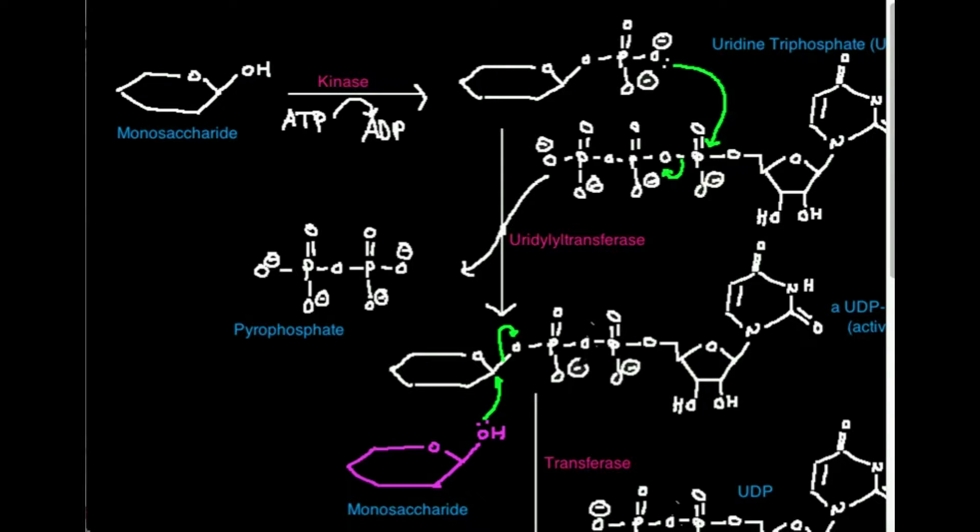And whenever we do a phosphorylation reaction, that means we're transferring a phosphate from ATP onto some atom of a molecule. In general, what we're doing is we're transferring a phosphate onto this oxygen right here.